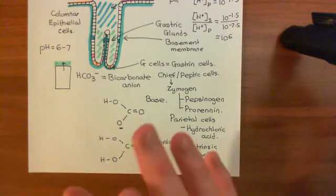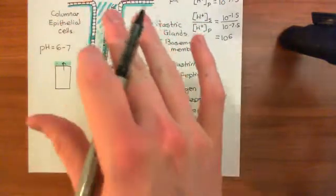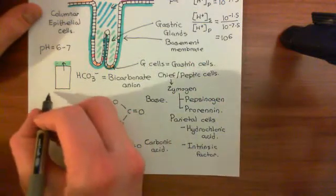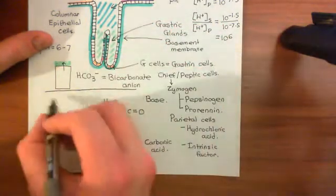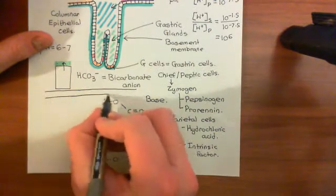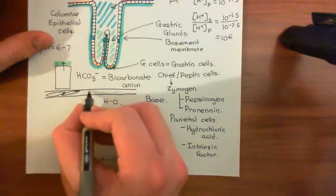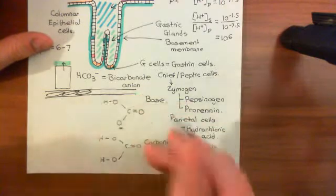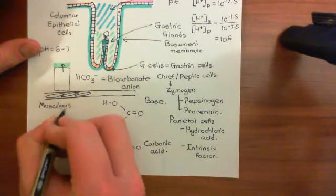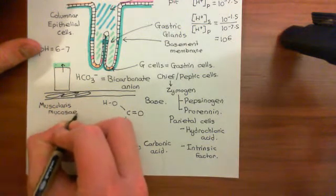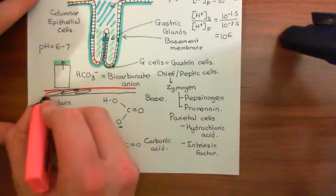Now let's take the structure of the stomach wall further. Underneath the outer layer we've been discussing, you have something called muscularis mucosae. This is a thin layer of smooth muscle cells, and I'll colour the boundaries of this layer in red.